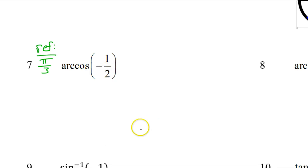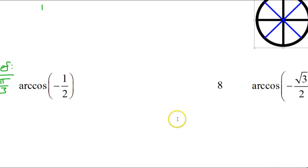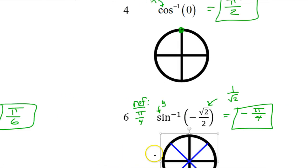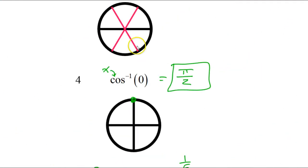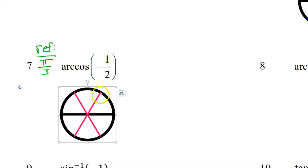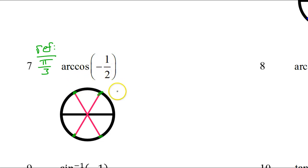Let's look at a unit circle with a bunch of pi over 3's on it. All four of these angles have a reference angle of pi over 3 — they will all give me 1 half when I take the cosine. These two will be positive and these two will be negative, because cosine is an x value on the unit circle, and x is positive on the right and negative on the left.